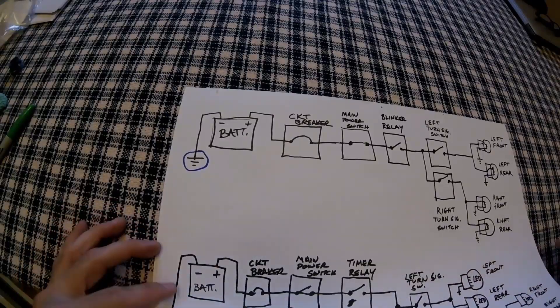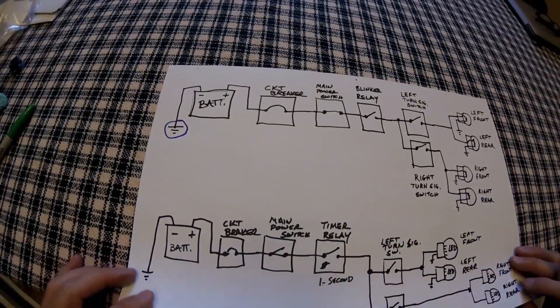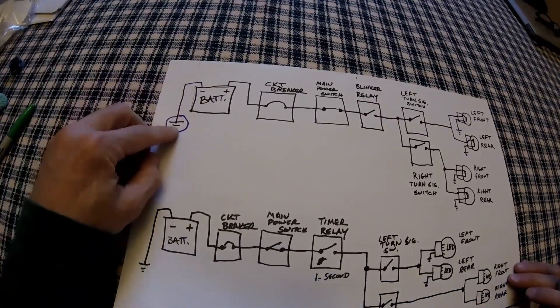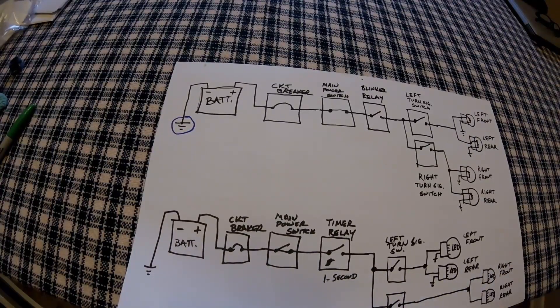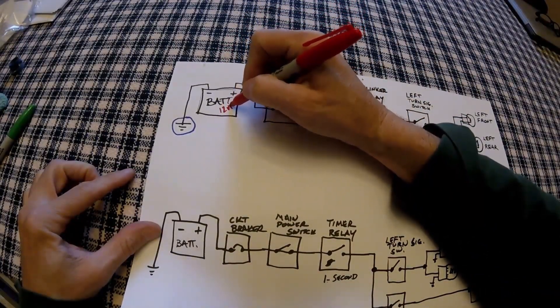On the older Harleys, they ground the turn signals internally. So there's not a separate wire ran or ground through the frame, and your negative battery wire is connected to your frame. So now let's take a look at what actually happens.